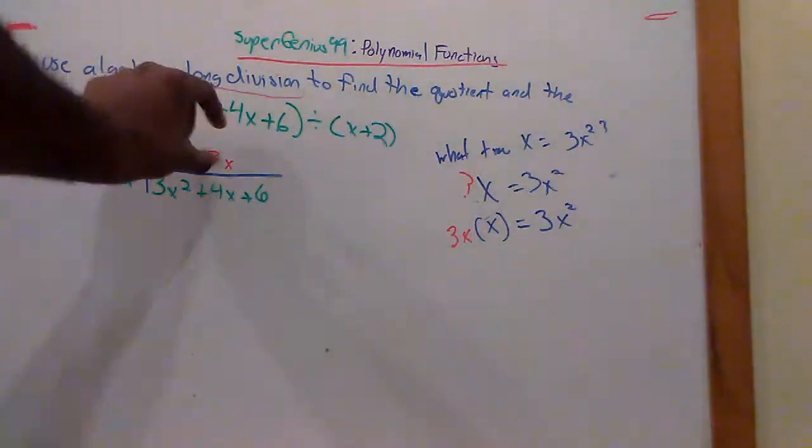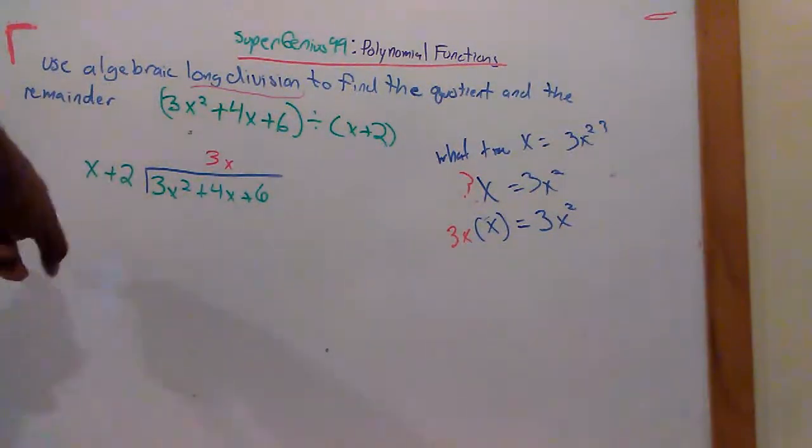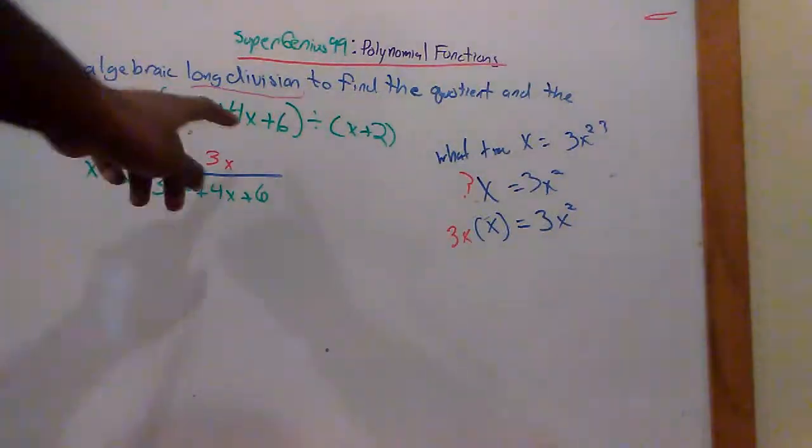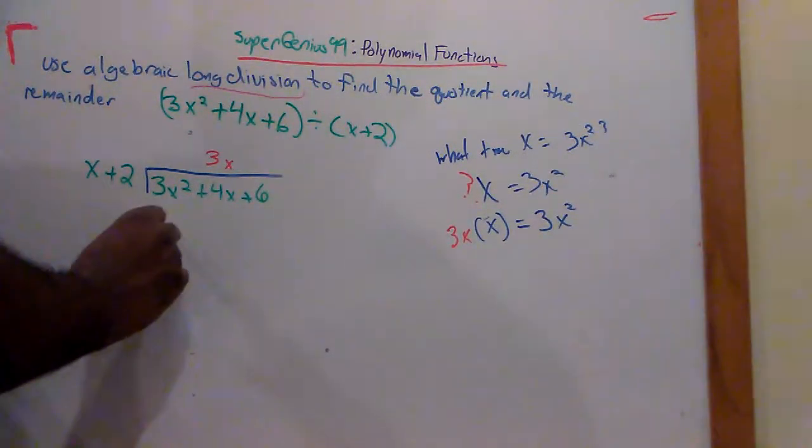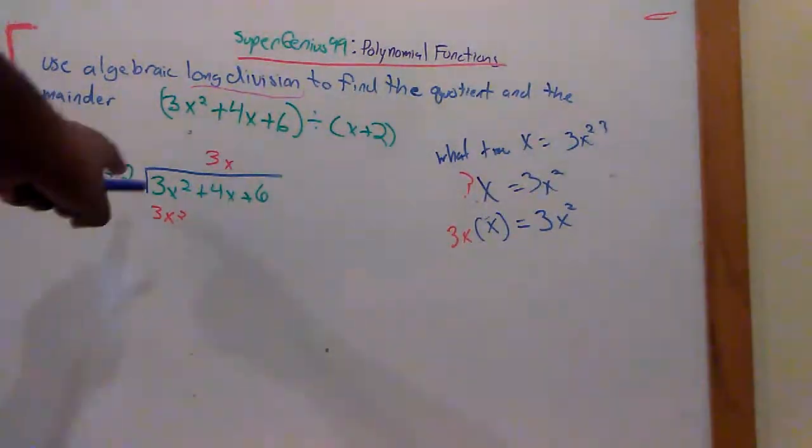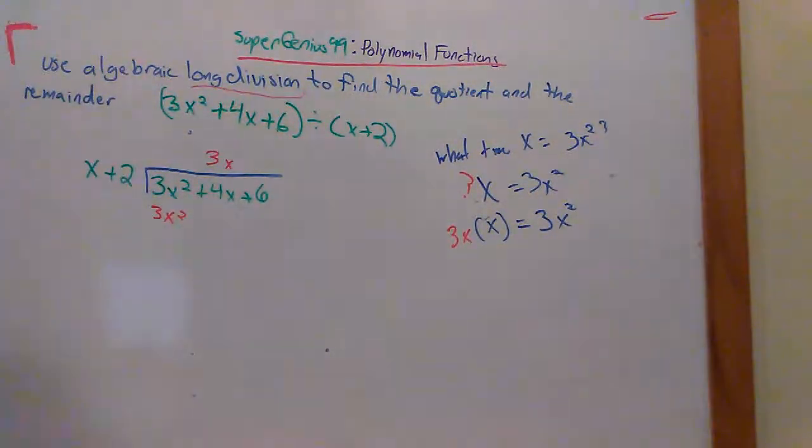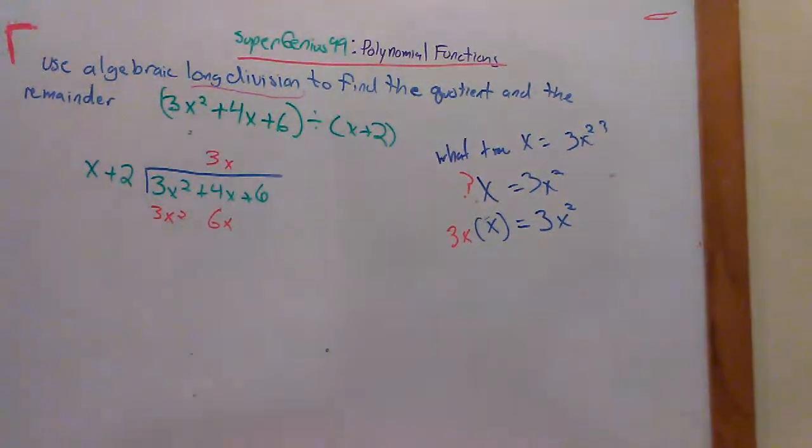Now, you take your 3x here and you multiply it by this x plus 2. So you say, what's 3x times x? We already know it. 3x squared. Now, don't just multiply it by the x. Multiply it by the 2. What's 3x times 2? Excuse me there. I meant to hit the pause button before I sneezed, but oh well.